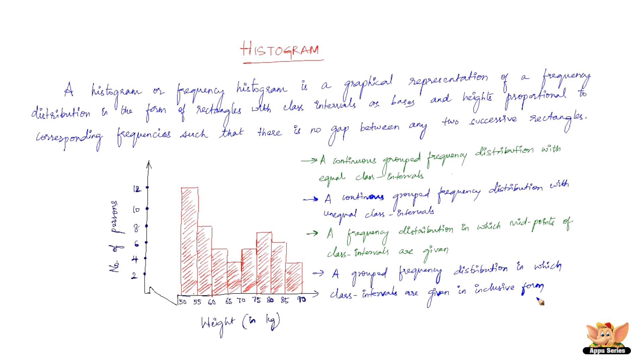And the final type of frequency distribution would be a grouped frequency distribution in which class intervals are given in inclusive form. So this video is an introduction to histogram and what it is in a typical example of a histogram graph. And the different types of frequency distributions for which we draw histograms. So in the forthcoming video let us start off with drawing histograms or constructing histograms for the continuous grouped frequency distribution with equal class intervals and go on with the rest of the three types of frequency distribution.